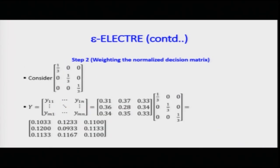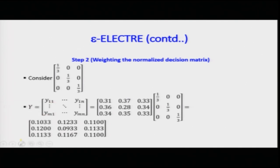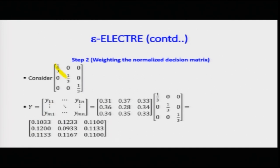I am considering a matrix of weights of one-third, one-third, one-third — a simplistic assumption to simplify the calculation. Multiplying the normalized logarithmic utility values by one-third gives the Y matrix values. Please write these down: first row: 0.1033, 0.1233, 0.1100; second row: 0.1200, 0.0933, 0.1133; third row: 0.1133, 0.1167, 0.1133. This matrix Y = X × W is what we will use for further calculations.